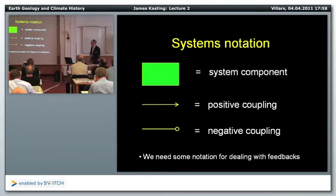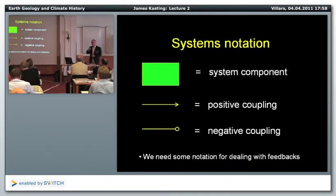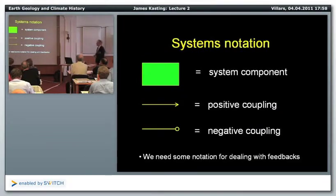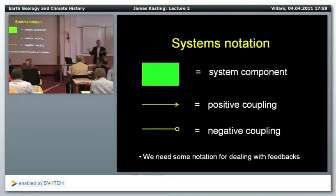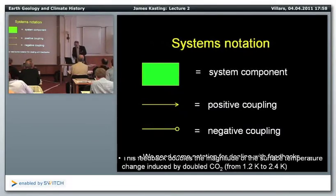Here's the notation I'll introduce — it actually comes from the electrical engineering literature. I was introduced to it by my colleague Lee Kump at Penn State. Electrical engineers put together systems with feedback, such as the feedback you get if a microphone gets too close to a speaker — a positive feedback loop you're all familiar with. In this notation, a box represents a component of a system. An arrow with a normal arrowhead is a positive coupling — an increase in box A causes an increase in box B. An arrow with a circular arrowhead is a negative coupling — an increase in box A causes a decrease in box B.